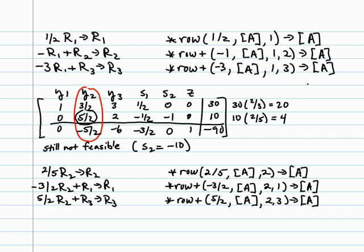Okay, so these are the row operations then that need to be performed on the tableau. 2 fifths row 2 stored into row 2. Negative 3 halves row 2 plus row 1 stored into row 1. And 5 halves row 2 plus row 3 stored into row 3. And here are their corresponding functions on the TI-84. So let's look at the tableau we get after that pivot.